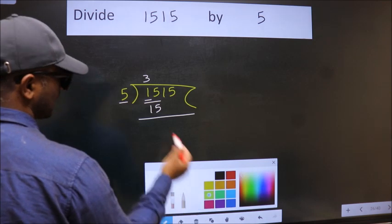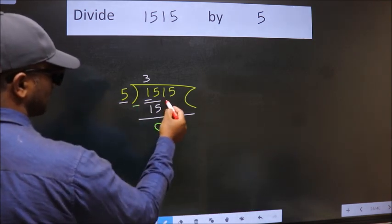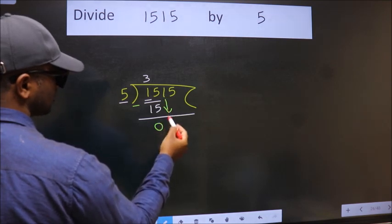Now, we should subtract. We get 0. After this, bring down the beside number. So, 1 down.